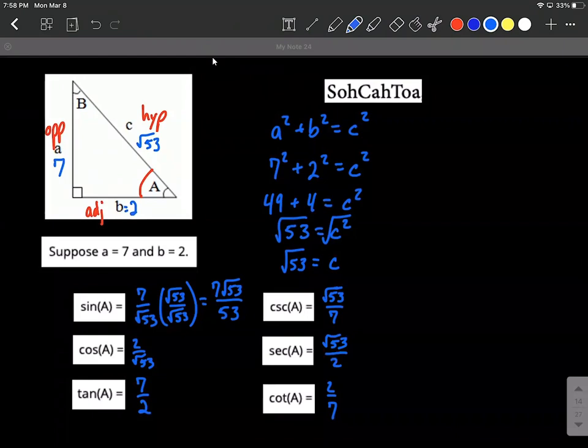These are nice exact answers of course we could get decimal approximations by putting the square root of 53 into our calculators and using the calculators but these are good exact answers. I hope this helps you in solving down finding these trigonometric ratios. Good luck!